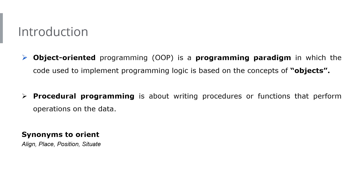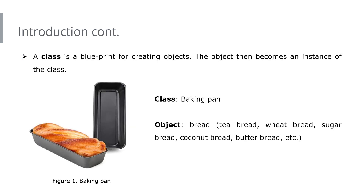Now let's look at what these objects actually are, because we've said a lot about them without defining them. This introduces us to classes. A class is a blueprint for creating objects, and the object then becomes an instance of the class. So objects are created from classes — the class is like a map, a steady guide from which those objects are created.